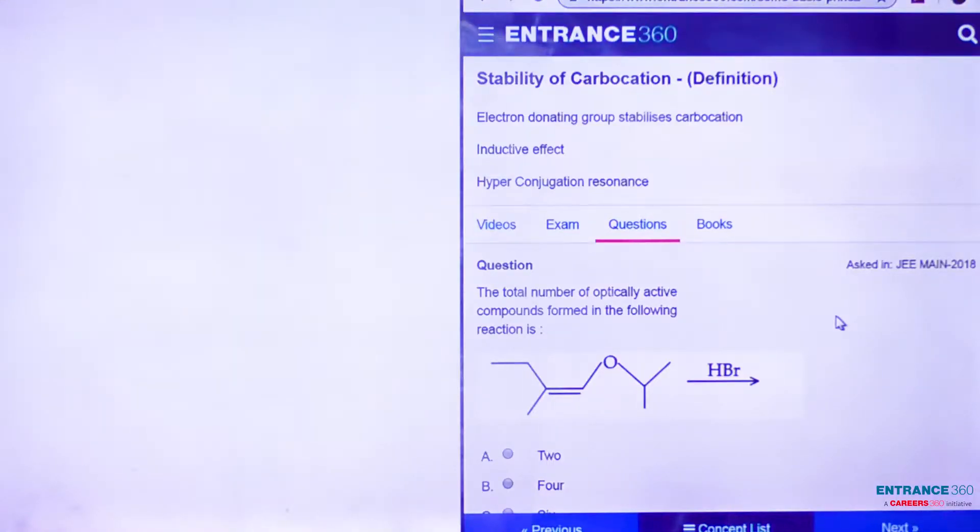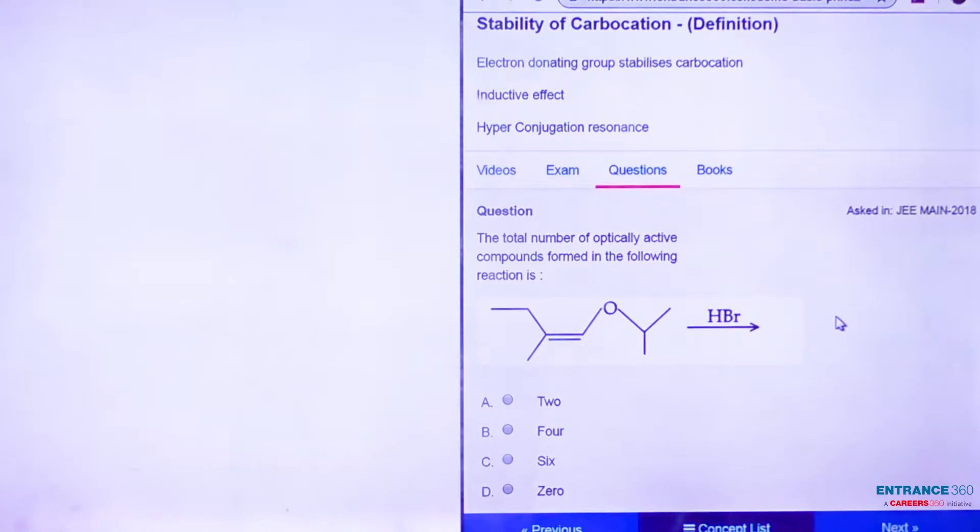Hello students, today we are going to solve a very tricky question from the Basic Principles of Organic Chemistry chapter. This question was asked in JEE MAIN 2018. We have to find the total number of optically active compounds formed during the reaction.